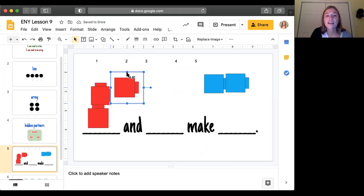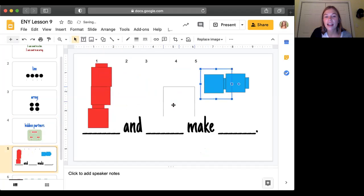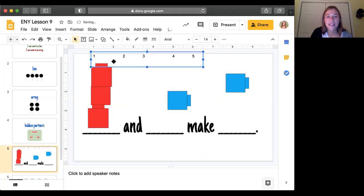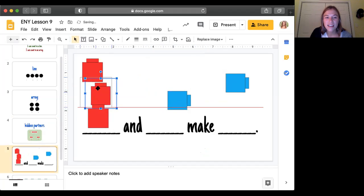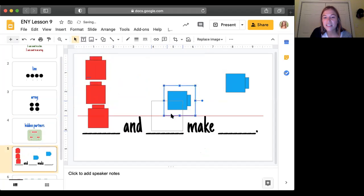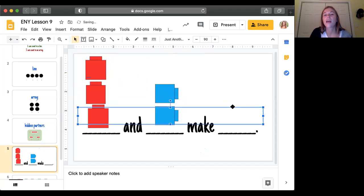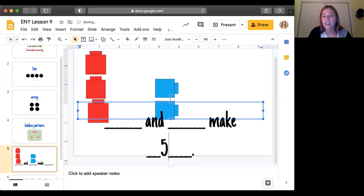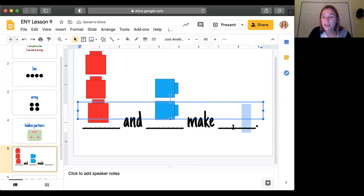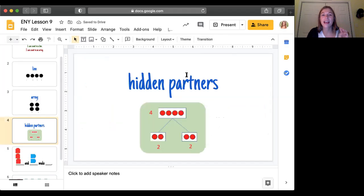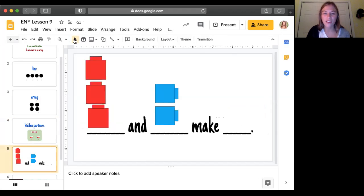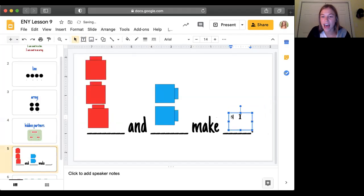Three and two make five. We know that three and two make five. All right, so Miss Weed's putting a five here. Three and two make five. We have three red cubes and two blue cubes.